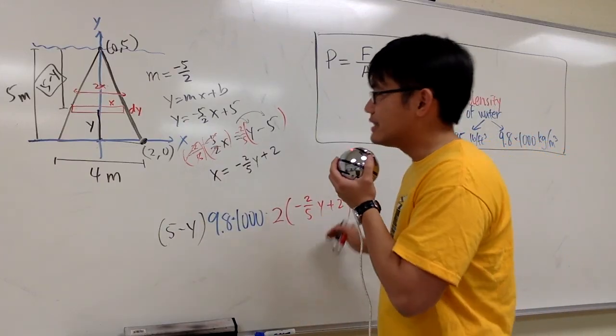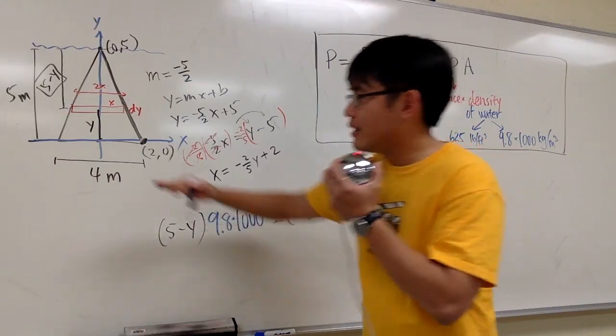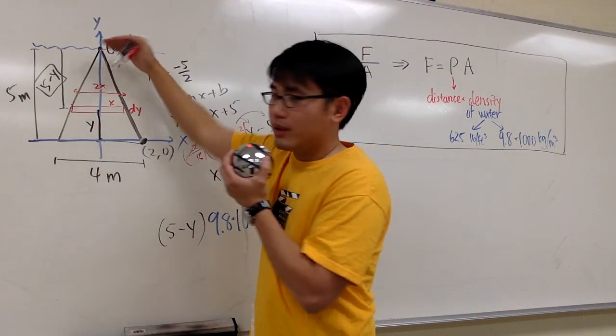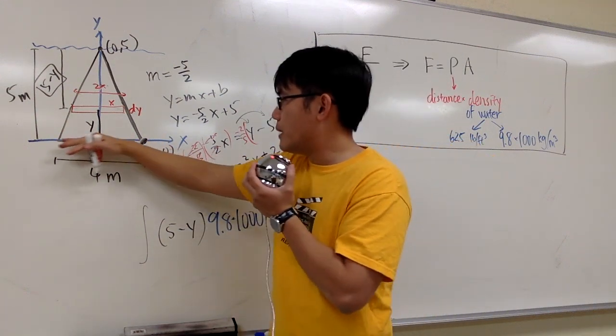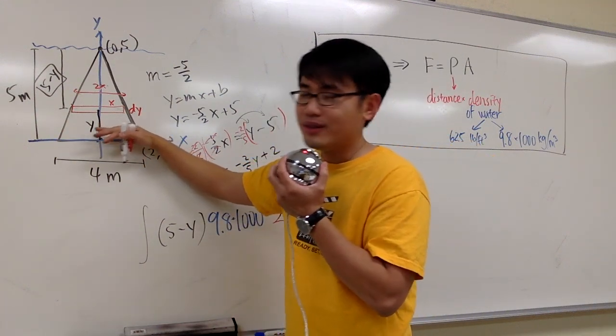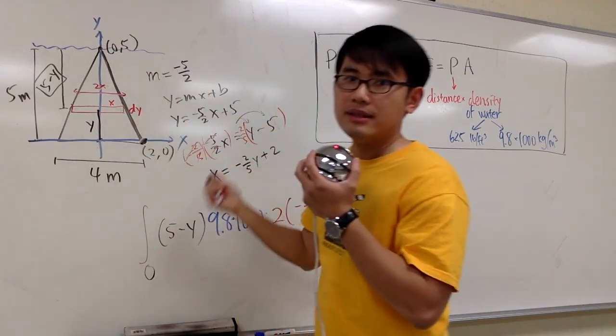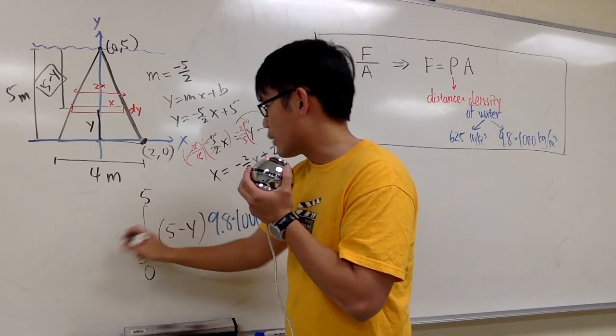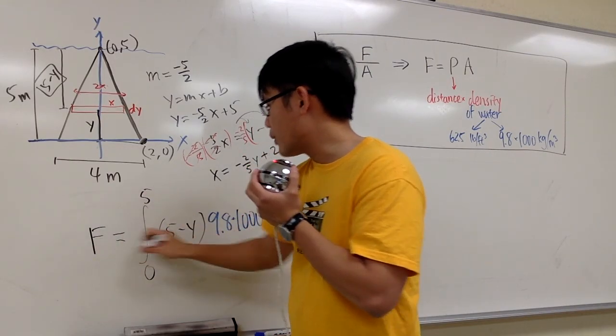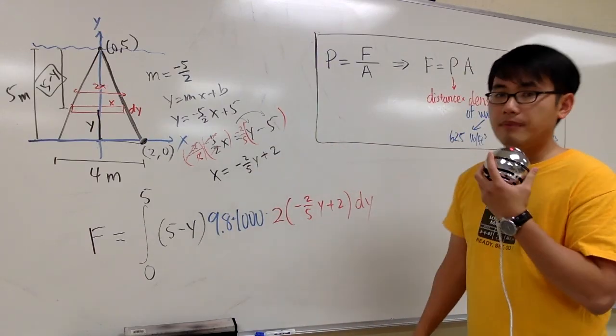This right here will give you the force that's acting on this red rectangle here, and I just have to integrate it the very first one till the very last one. So, I'll integrate this. The very first one will be y is equal to 0, and then the very last one all the way on the top is when y is equal to 5. So, that will be the integral. And then, that will give us the force for that triangular plate. And we are done.